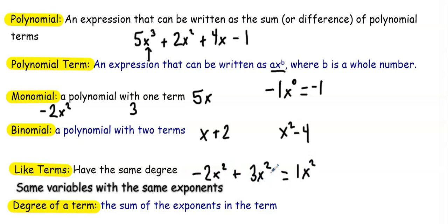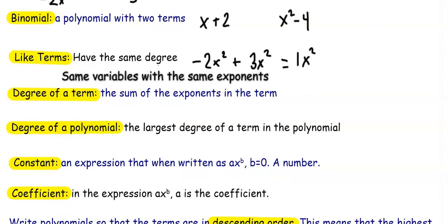As you can see in this example, like terms not only have the same degree, but they have the same variables with exponents. The degree of the term is the sum of the exponents in the term. So if my term is 12x⁵, my degree is 5. If my term had 3x²y, the degree would be 3 because I do 2 plus 1.